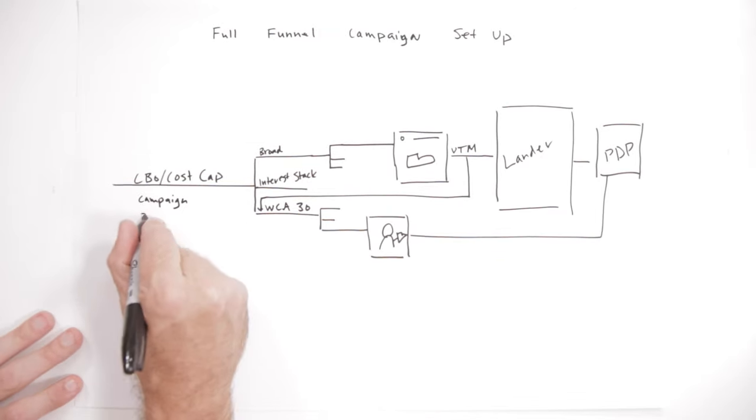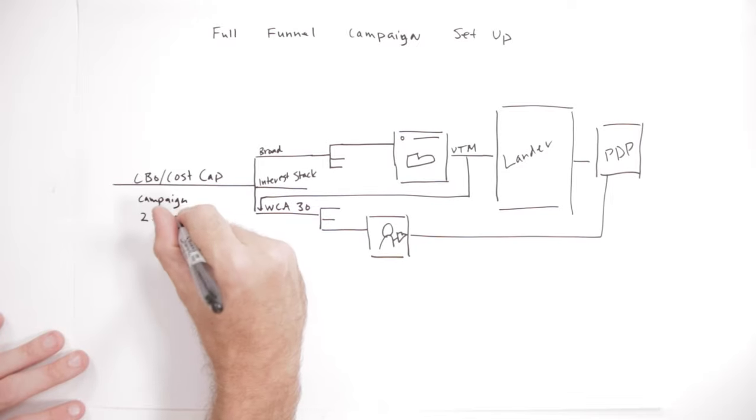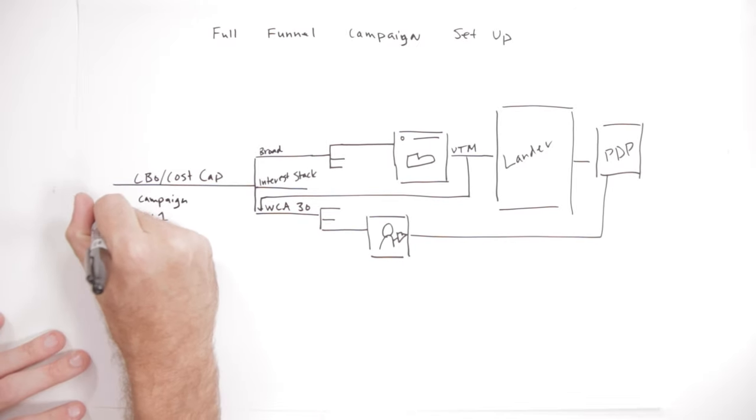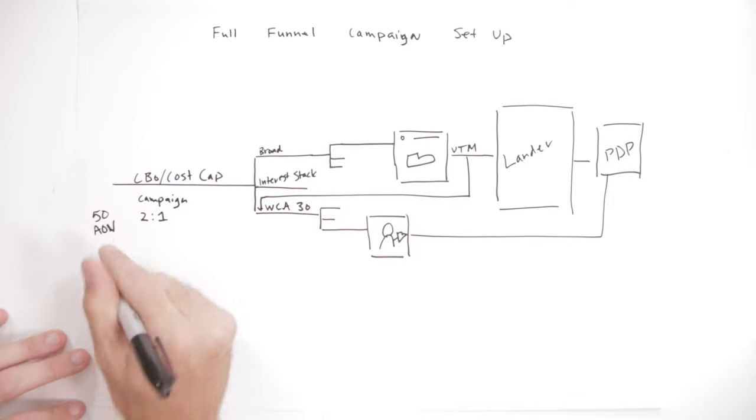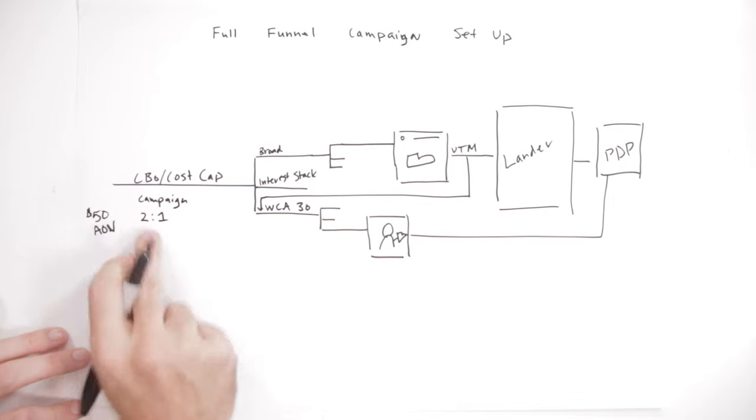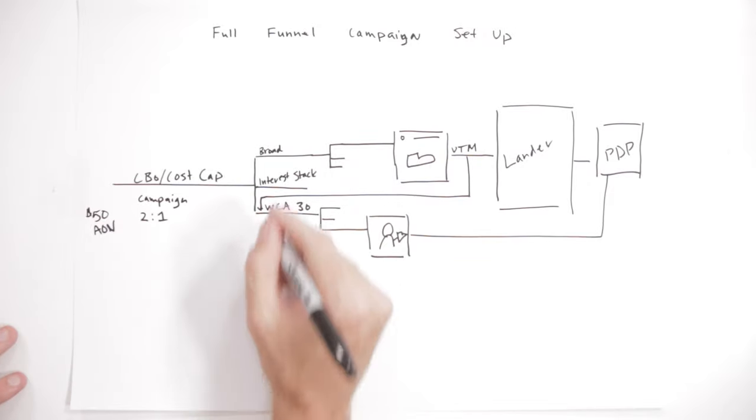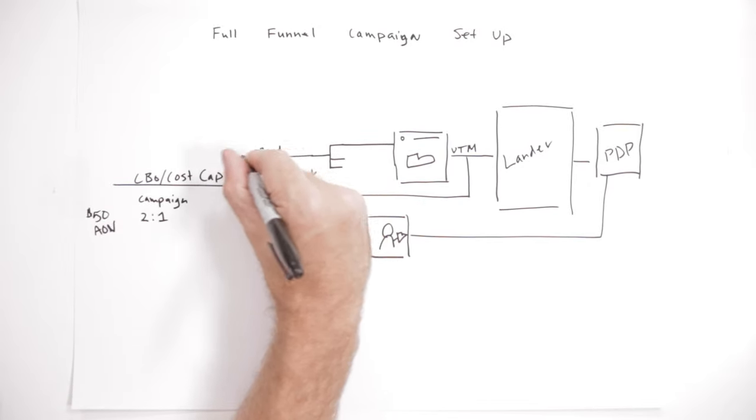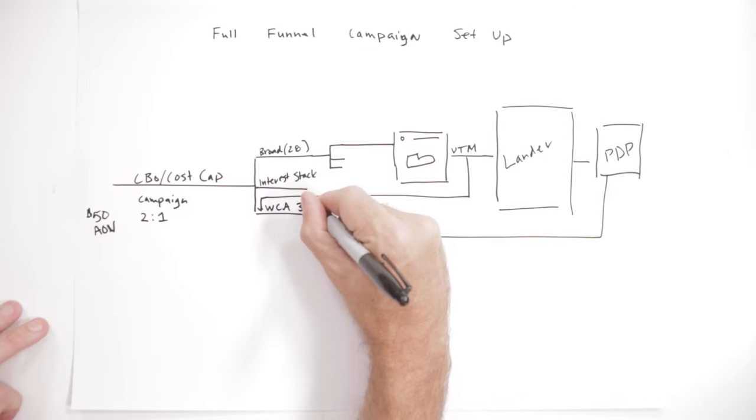So let's say I want the whole campaign, I want to have a two to one. Then what my cost cap needs to be is like, and let's say it's a $50 AOV, so I can use cost caps, which are a CPA measurement. So I have a $50 AOV. I want a two to one ROAS. So overall I need a $25 CPA. Well what I'll set up as a target is in my prospecting sets, I'll have a $28 or so cost cap. In my WCA 30 I'll have something like a $22 cost cap.